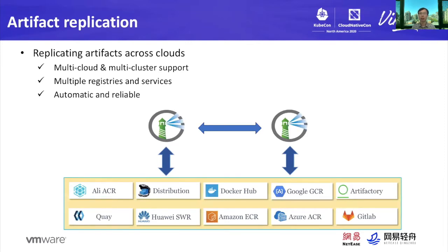The first artifact management feature I'd like to talk about is replication. This feature was created in Harbor's early version 0.3. It allows two Harbor instances to synchronize images from one to the other. In the latest release of Harbor, it can support replications of artifacts across multiple cloud environments with various registry services, such as Docker Hub, AWS, Google, Azure, and so on. It is very simple to move your artifacts between different environments.